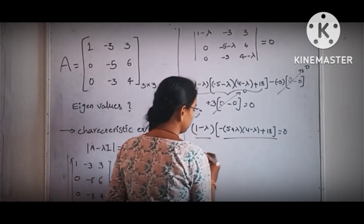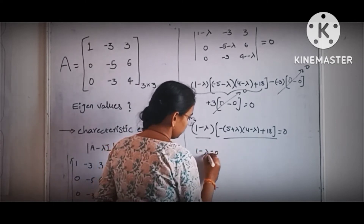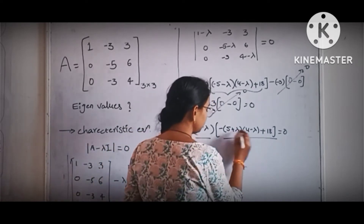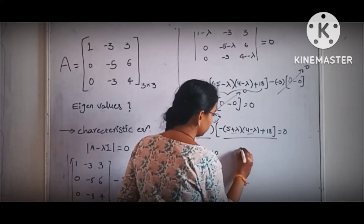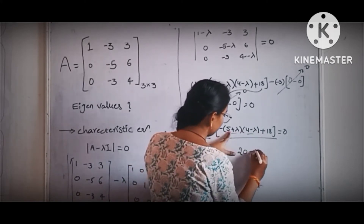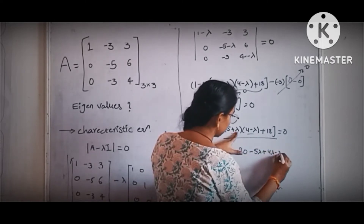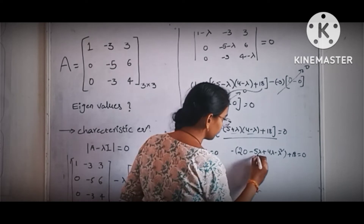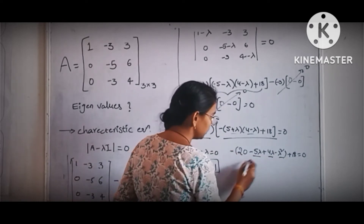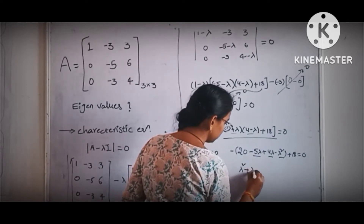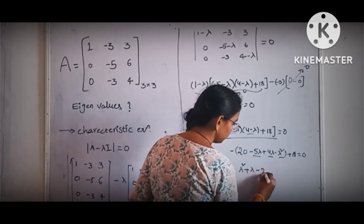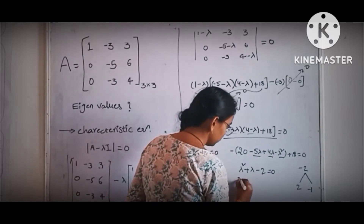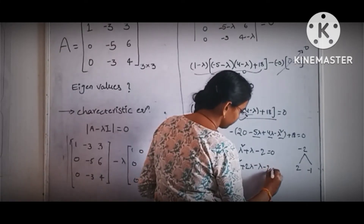From 1 minus lambda equal to 0, we get lambda equal to 1. Now simplifying the remaining term: 5 times 4 is 20, minus 5 lambda, plus 4 lambda, minus lambda squared, plus 18 equal to 0. Multiplying through by minus and simplifying, we get lambda squared plus lambda minus 2 equal to 0.